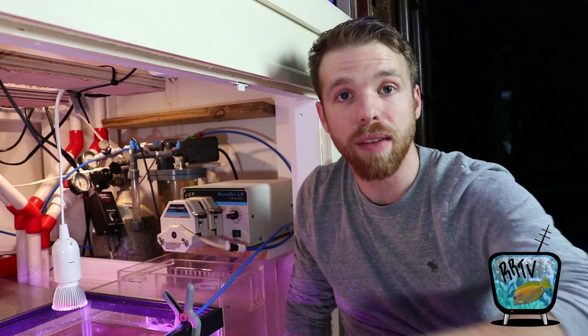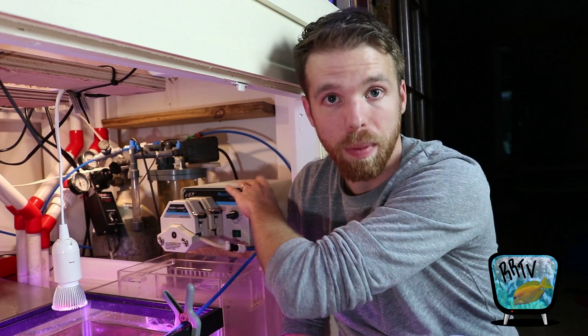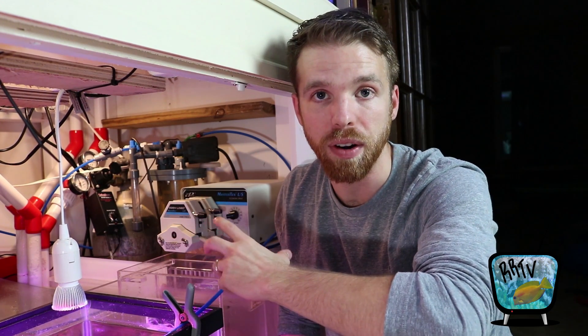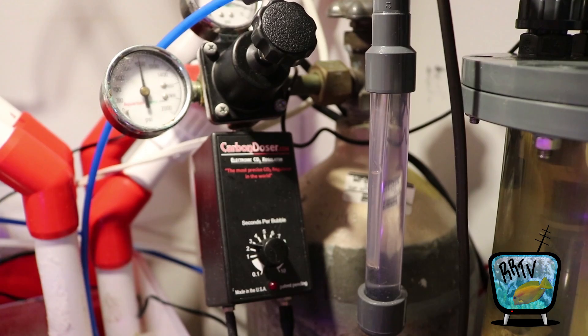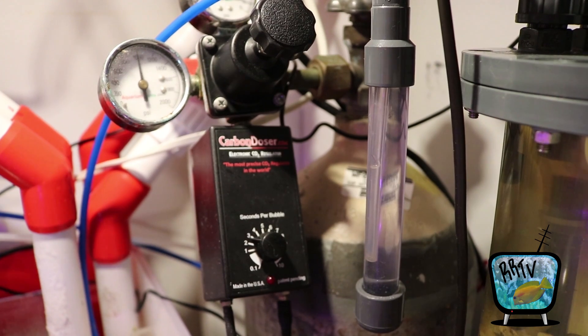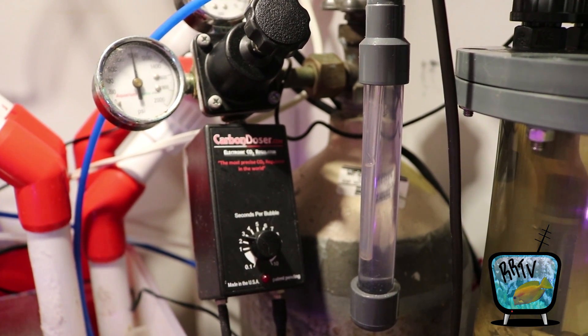The first thing I've done is turned off this peristaltic pump. This is what pumps water in and out of the calcium reactor. I've turned it off so I can disconnect the lines from the calcium reactor and get it out. I'm also going to turn off the CO2 regulator so it doesn't continue to feed CO2 into the tank.